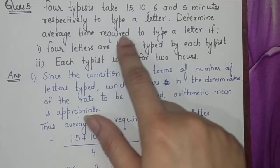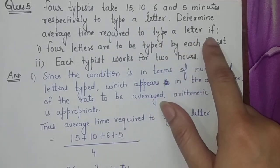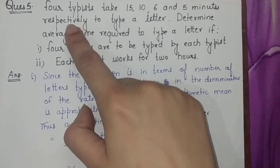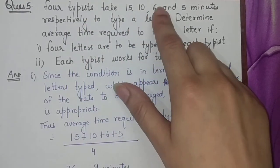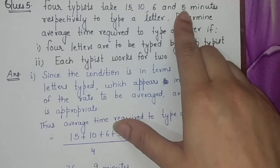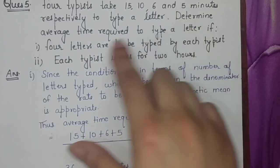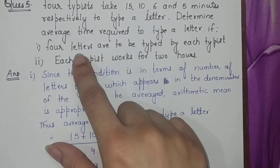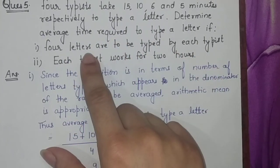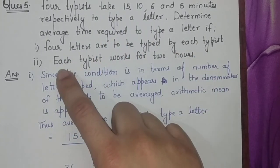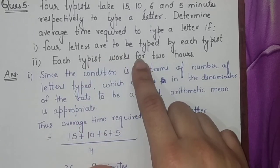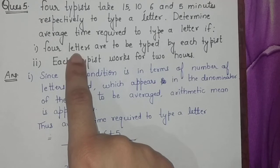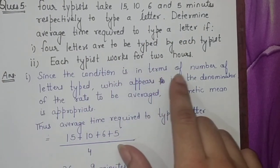There are four typists. One types a letter in 15 minutes, one in 10 minutes, one in 6 minutes, and one in 5 minutes. You need to tell the average time if each typist has to type four letters. There are two situations: first when each typist will type four letters, and in the second situation each typist will work for two hours.